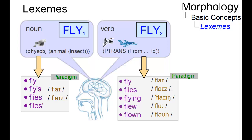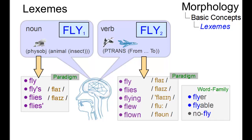For example, the lexeme FLY number 2 has such an extended set. Such a set can be referred to as a word family.